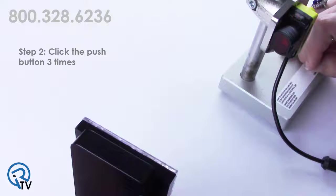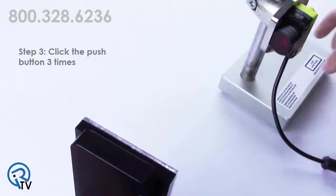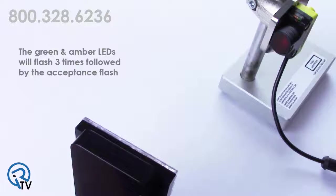The green and amber LEDs will flash simultaneously at 1 Hertz to indicate you've entered this menu. Click the push button three times to enable the auto compensation feature. The green and amber LEDs will flash three times followed by the acceptance flash.